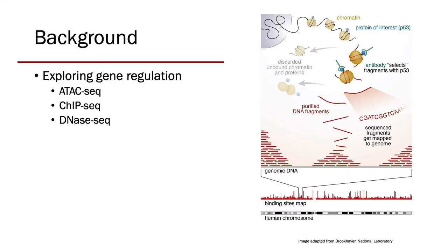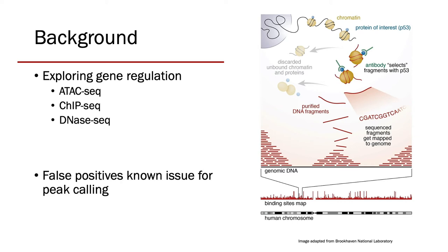Chromatin profiling assays like ATAC, ChIP, and DNase-seq work by selectively pulling down DNA fragments, which are then aligned to a corresponding reference genome. Areas of interest are identified by their increased fragment density through the use of a peak caller, which typically works by applying some statistical tests. Generally, real peaks are enriched to the point of statistical significance, but the occurrence of false positives in peak calls is a well-known problem.